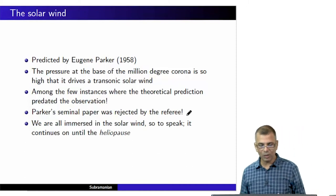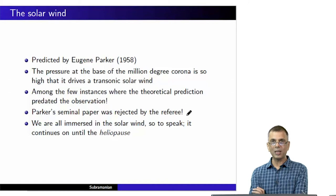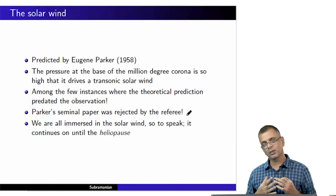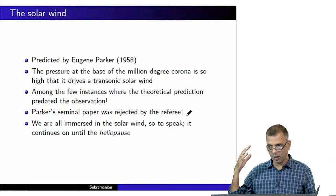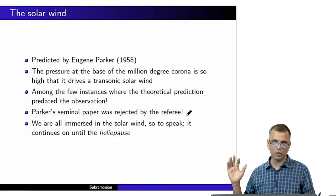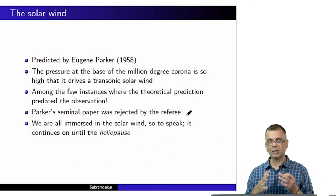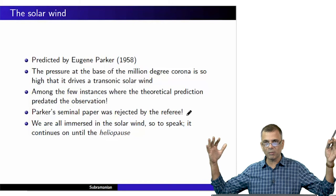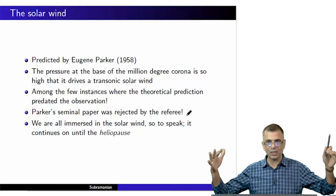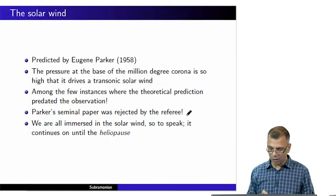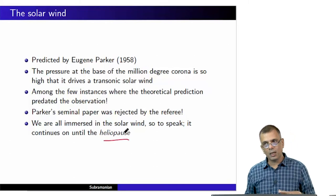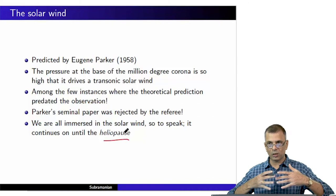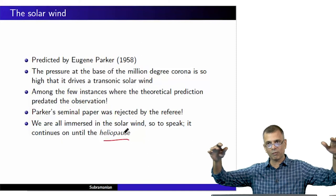In a sense, we are all immersed in the solar wind. The solar wind emanates from the sun and flows outwards, going on beyond the orbit of Neptune or even beyond Pluto. It continues until the ram pressure of the solar wind cannot take it any further — the pressure of the surrounding interstellar medium acts as a wall and blocks the solar wind. That place is called the heliopause. The solar system is thought to be that volume permeated by the solar wind, up until the heliopause.